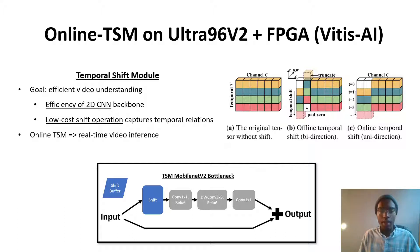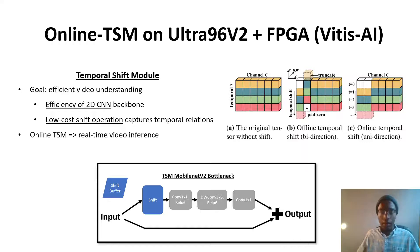The blue box is the online shift operation. For every input, we take the first one-eighth of channels of that input and place them in the shift buffer. The shift buffer's current contents from the previous frame is then shifted into the first one-eighth channels of what was our current input. This input then continues down the normal bottleneck structure.